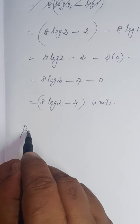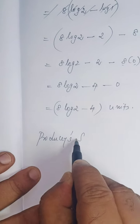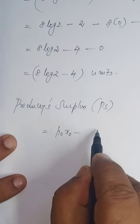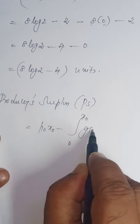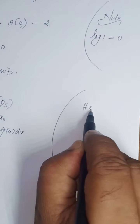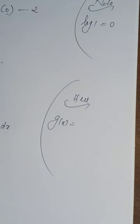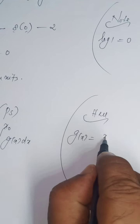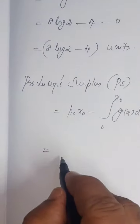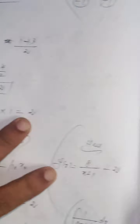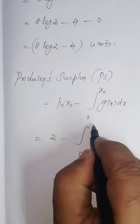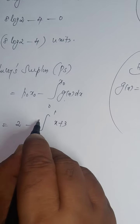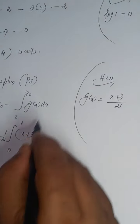Now we find the producer surplus. The formula for PS is: PS equals p₀x₀ minus integral from 0 to x₀ of g(x) dx. Here g(x) is the supply function, which is (x plus 3) divided by 2. So PS equals 2 times 1 minus integral from 0 to 1 of (x plus 3)/2 dx, which can be written as 2 minus (1/2) times integral from 0 to 1 of (x plus 3) dx.